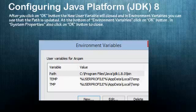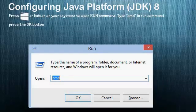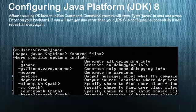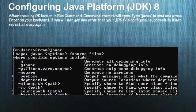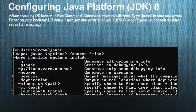In System Properties, also click OK to close. Now press the Windows key along with R to open the Run prompt. Type CMD and press OK. The Command Prompt will open. Type 'java' in CMD and press Enter. If you get no error, then your JDK 8 is configured successfully. If not, repeat all steps again. Thanks for watching — subscribe to my YouTube channel for more updates.